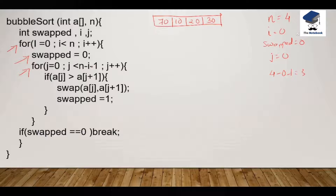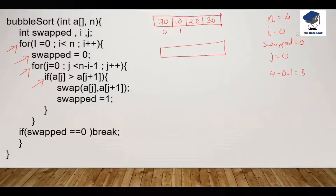So j will run till the third element. We check: 0 is less than 3 — yes. We come under the nested for loop and perform the condition check: a[0] which is 70 is greater than a[1] which is 10 — yes. The condition is satisfied, so we perform the swap between a[0] and a[1]. 10 goes to the left-hand side and 70 goes to the right-hand side, giving us [10, 70, 20, 30]. The value of swap becomes 1 and j is incremented to 1.